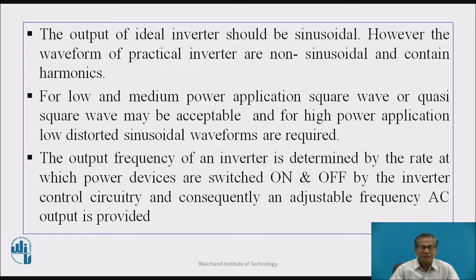The output of a practical inverter is a square wave. For low and medium power applications, square wave or quasi square wave may be acceptable, and for high power applications, low distorted sinusoidal waveforms are required. The output frequency of an inverter is determined by the rate at which power devices are switched on and off by the inverter control circuitry, and consequently an adjustable frequency AC output is provided.